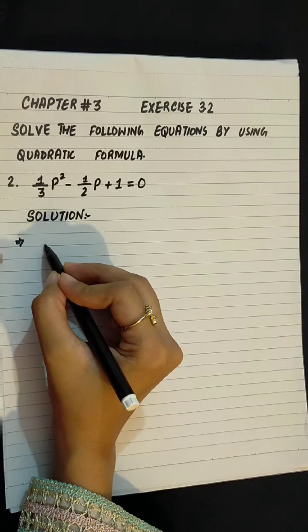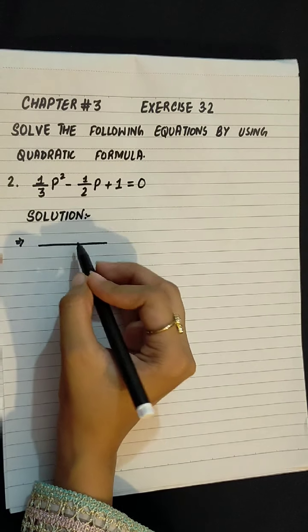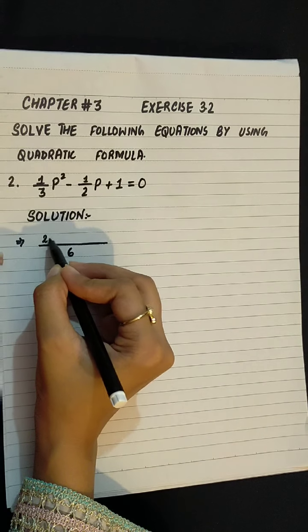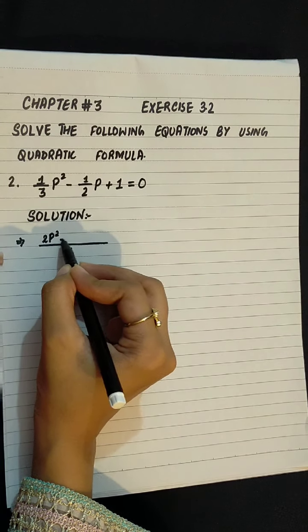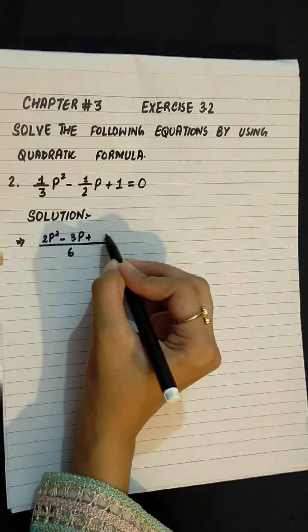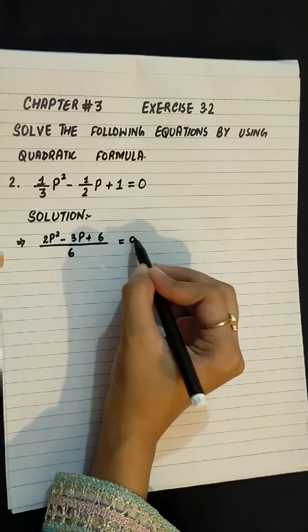LCM we will solve first. So, LCM will be 6. This will be 2p² - 3p + 6 = 0.